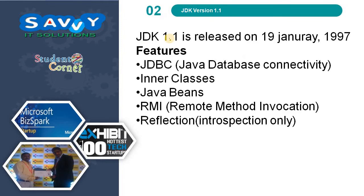Coming to the second one: Java JDK 1.1 is released on 19th January 1997. The features are JDBC (Java Database Connectivity), Inner classes, Java Beans, RMI (Remote Method Invocation), and Reflections.